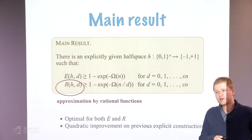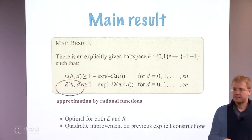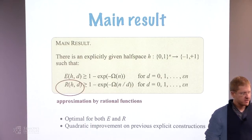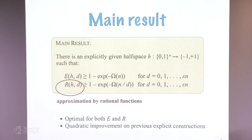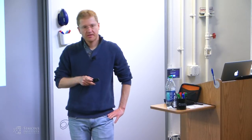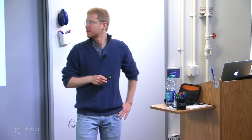Rationals get much better approximations — if you allow approximation by rational functions, you get better dependence very quickly. This is a very natural and clean problem; the speaker has been interested in it for eight years, and it is only this year that the puzzle pieces came together to make the construction explicit. Epsilon here is some constant that can be taken larger than a hundredth.